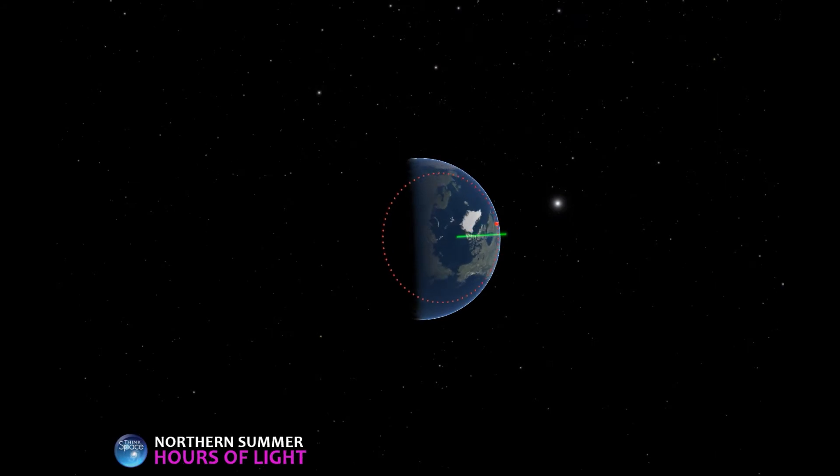This circle represents the path Boston takes through a 24-hour day. As you can see, most of this circle falls into daylight. Approximately 15 hours, in fact. Only 9 hours are spent in the darkness, back here.